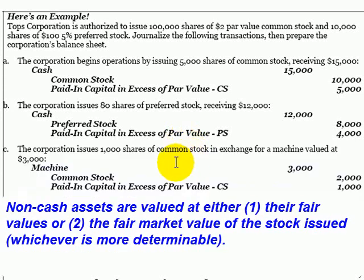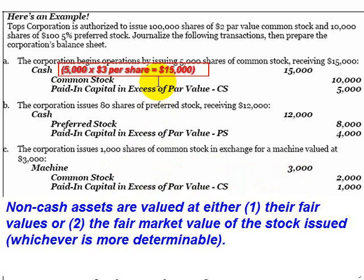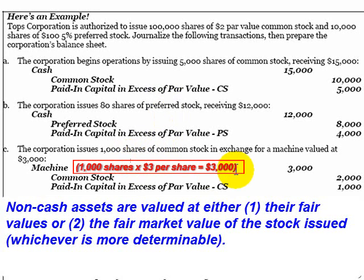In transaction C, our corporation issues common stock in exchange for an asset other than cash. When stock is issued for non-cash assets, we need to value the new asset at its fair market value if that's determinable, or at the fair market value of the stock that was issued if that happens to be a more reliable figure. We've just issued the common stock at $3 a share, and $3 per share times 1,000 shares gives us $3,000.